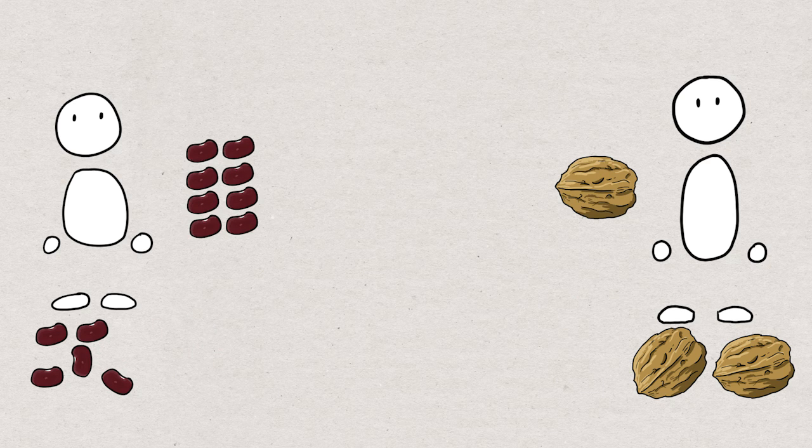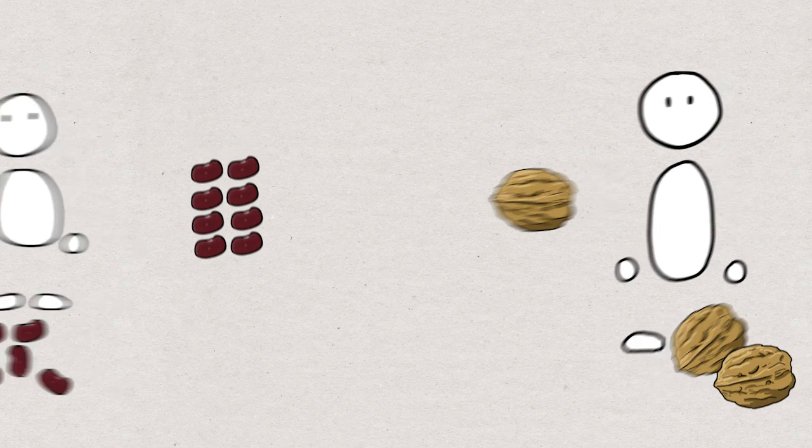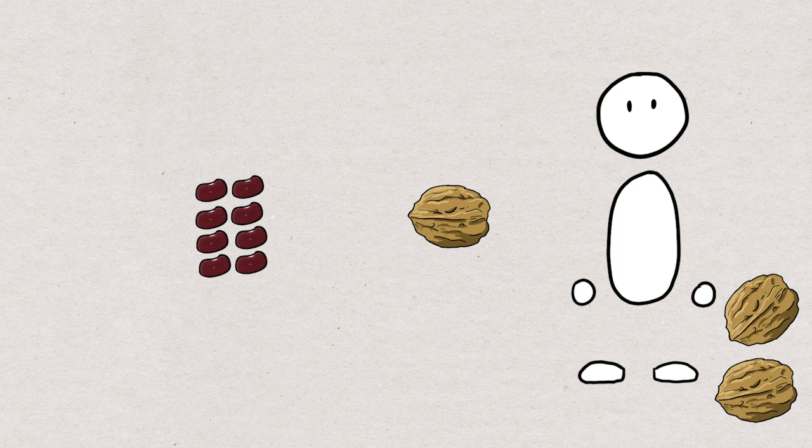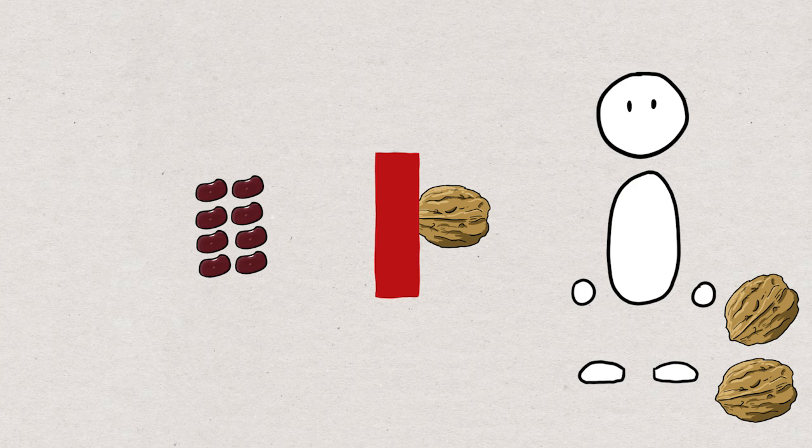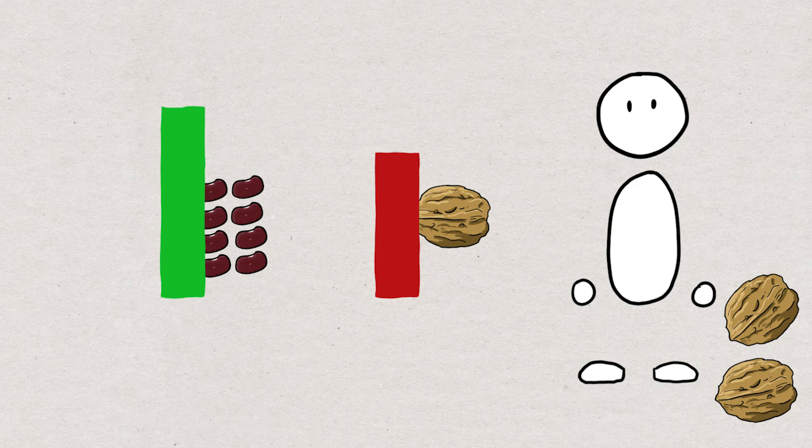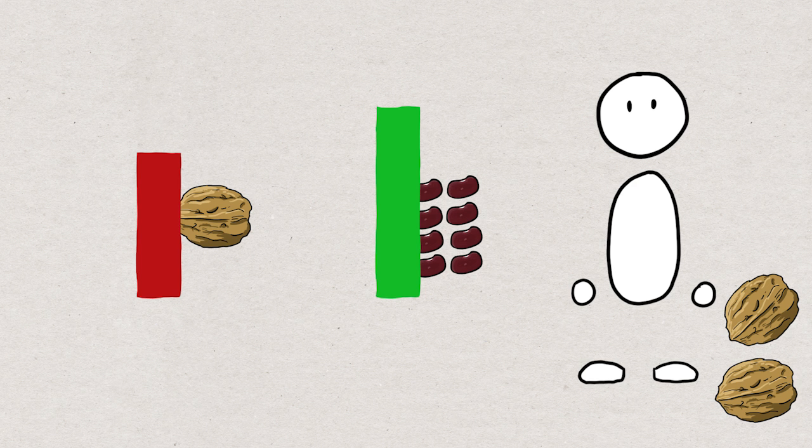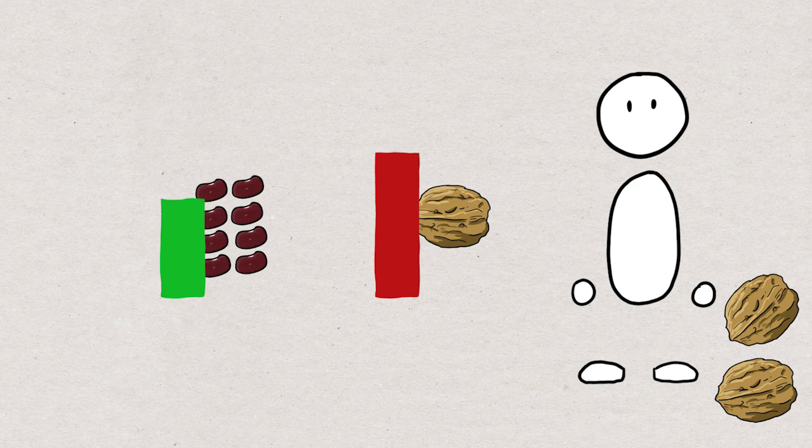Okay if one person offers eight of these beans for a walnut and they trade, we can learn from this. This person has to give up the walnut to get the beans, so he's losing the value he feels he has from the walnut and is gaining the value he feels he has from the beans. And we know that if he's gonna make the trade, he feels that the value of the beans is higher than the value of the walnut. Otherwise he wouldn't trade. Otherwise he'd be worse off.